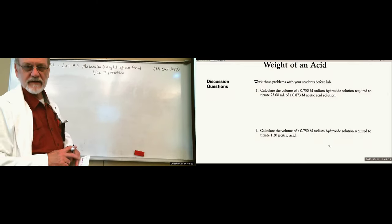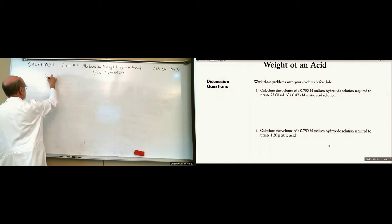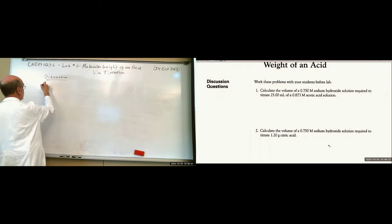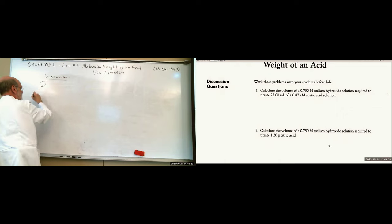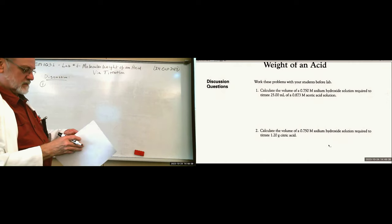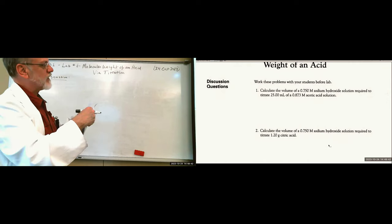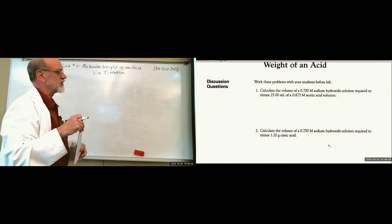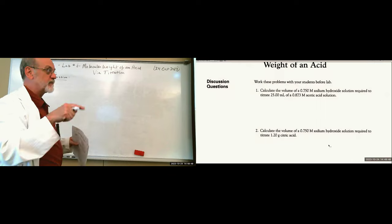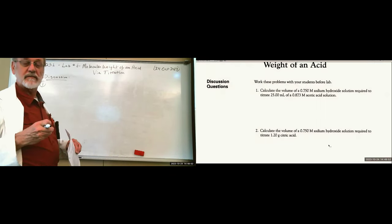Let's look at discussion question one: Calculate the volume of 0.750 molar sodium hydroxide solution required to titrate 25 milliliters of 0.873 molar acetic acid.